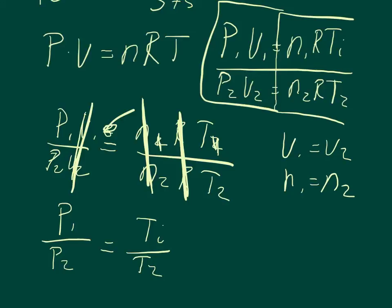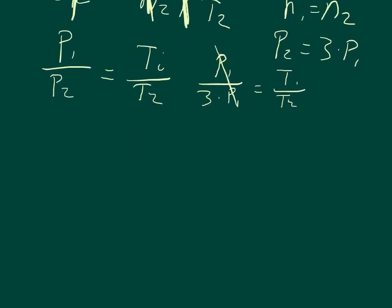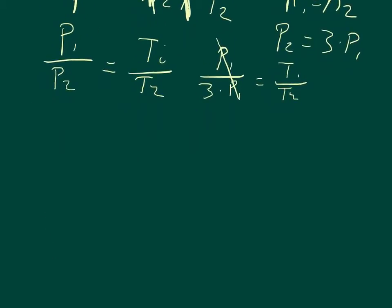And so it says if the gas is heated at constant volume until the pressure triples, what is the final temperature? So we know that P2 equals 3 times P1. So we can substitute that in, that P1 over 3 times P1 equals T1 over T2. And then you can see that P1 cancels out. So I'm just going to move this up. And from that, we can see that 1 third equals T1 over T2.